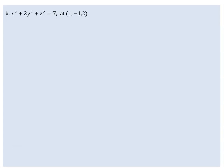For the next problem, you are given the equation x² + 2y² + z² = 7, and you need to find the tangent plane and the normal line at the point (1, -1, 2). As usual, we are going to find the partial derivatives of f with respect to x, y, and z, and use the formula accordingly.